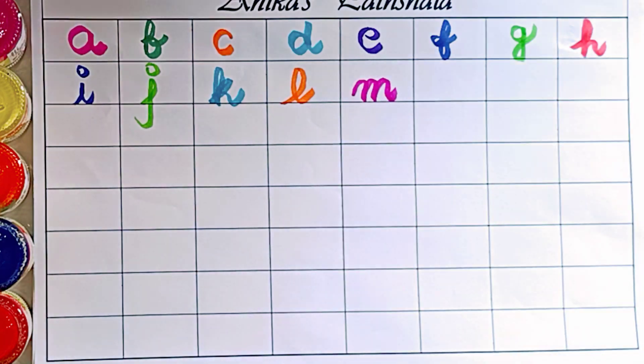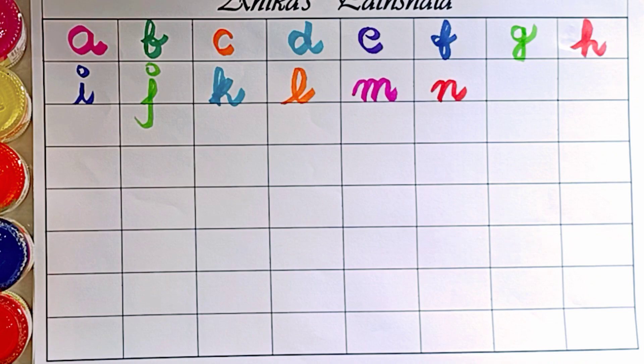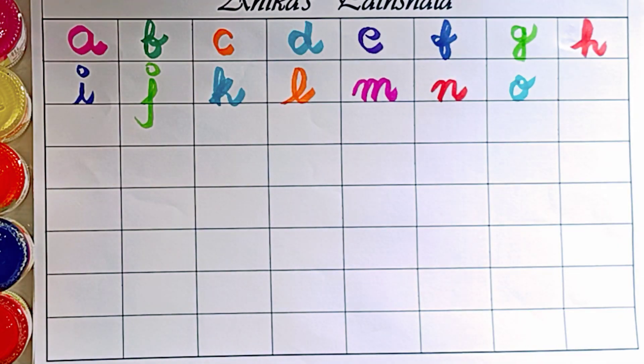M. M is for monkey. N. N is for nest. O. O is for orange.